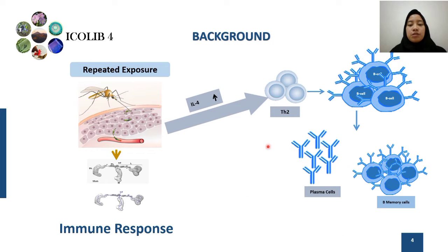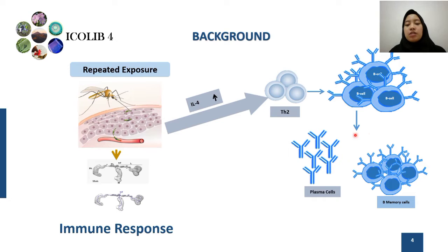However, in repeated exposures to the saliva, it can benefit the host because the TH2 immune response can activate B cells, which then differentiate into plasma cells secreting antibodies, and also into B memory cells. This kind of immune response can build humoral immunity in the host against viral infection transmitted by mosquito.